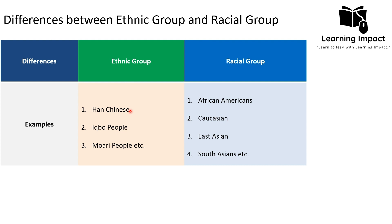The Han Chinese are considered the largest ethnic group in the world. They include the people of China and Taiwan and share the Mandarin Chinese language. They form the largest ethnic group in the world because they share a common culture, traditions, and have a huge population.